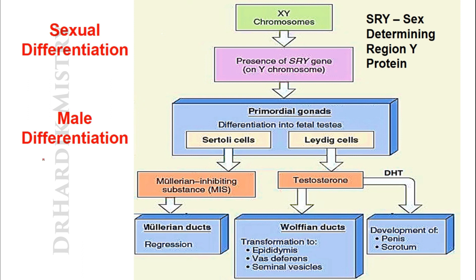Now, sexual differentiation — how it takes place. The fertilized ovum is neutral and can be converted to either a male or female fetus. We will first look at male differentiation and later go through female differentiation.